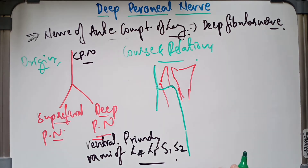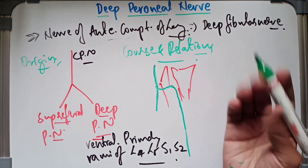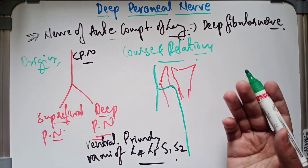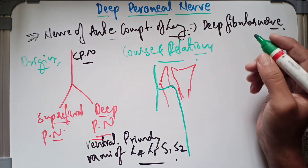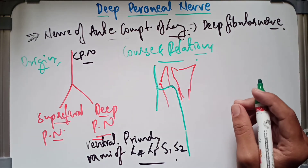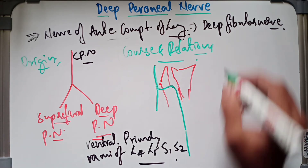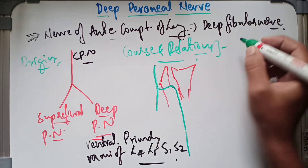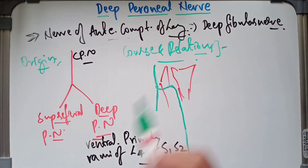In terms of relations, the deep peroneal nerve relates to muscles including the extensor hallucis longus, extensor digitorum longus, and tibialis anterior — the muscles of the anterior compartment of the leg.